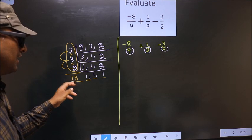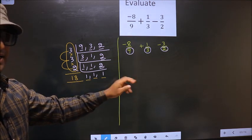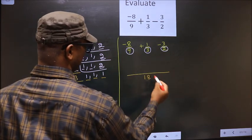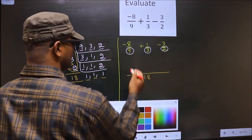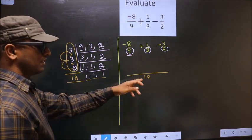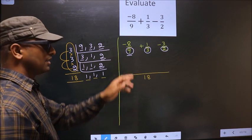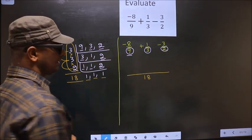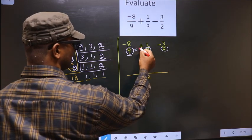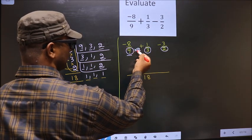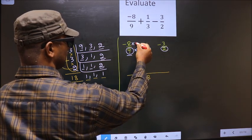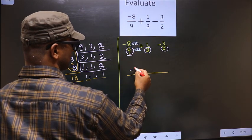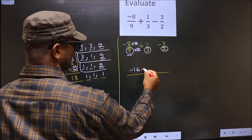Whatever LCM we got here, we should write here in this way. Here we have 9 in the denominator. Here we have 18. Now 9 should change to 18. For that to happen, we should multiply by 2. Whatever number we are multiplying in the denominator, in the numerator also we should multiply by the same number. So we get minus 8 into 2 is minus 16.